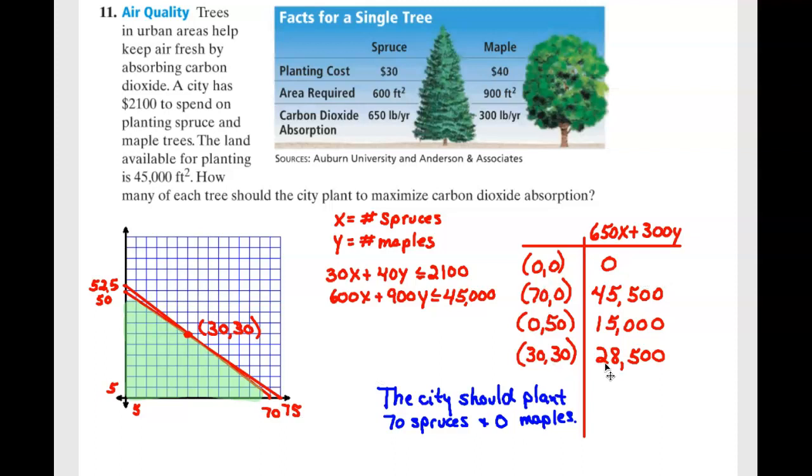And then what we're going to do is plug those in to the pounds per year. Because the question says, how many of each tree should the city plant to maximize carbon dioxide? So whatever you're maximizing or minimizing is your objective function. So it's 650x plus 300y.